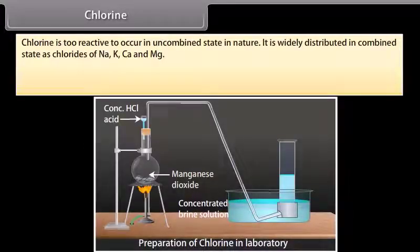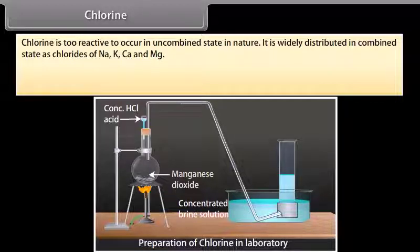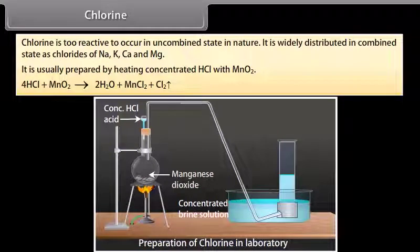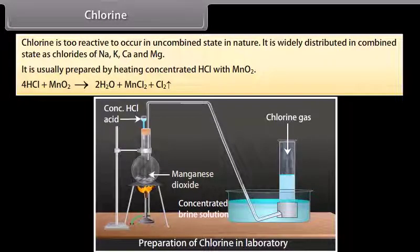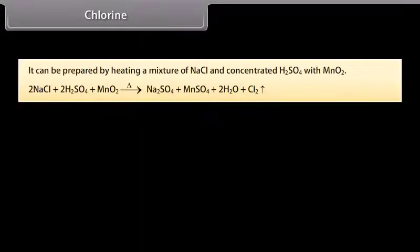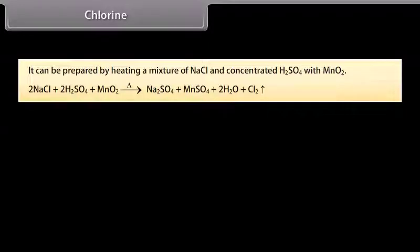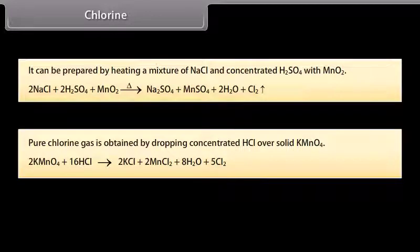Chlorine is too reactive to occur in uncombined state in nature. It is widely distributed in combined state as chlorides of Na, K, Ca and Mg. It is usually prepared by heating concentrated HCl with MnO2. It can also be prepared by heating a mixture of NaCl and concentrated H2SO4 with MnO2. The gas is passed through water to remove HCl and then dried by passing through concentrated H2SO4. Pure chlorine gas is obtained by dropping concentrated HCl over solid KMnO4.